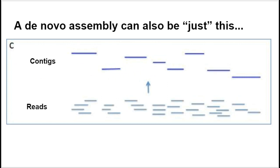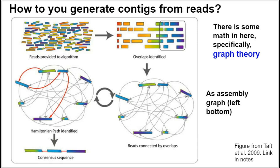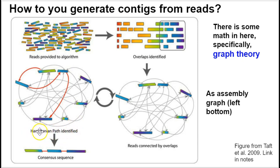So how do you generate contigs from reads? In order to understand that, we need to learn a little bit about a kind of mathematics called graph theory. That's the math that underlies taking reads, looking for areas of overlap, connecting them together, and figuring out the order in which these fragments should be placed to derive contigs or larger structures representative of the original sequence. The figure refers to finding a Hamiltonian path, but we'll also talk about Eulerian paths.